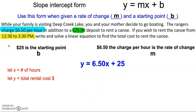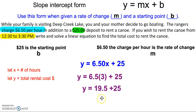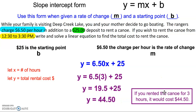That means you would rent for a total of three hours. So we could use that three hours as a value of x and then plug in and solve for the total cost to rent for three hours. When we do that, we get a total cost of $44.50. So if you rented the canoe for three hours, it would cost $44.50.